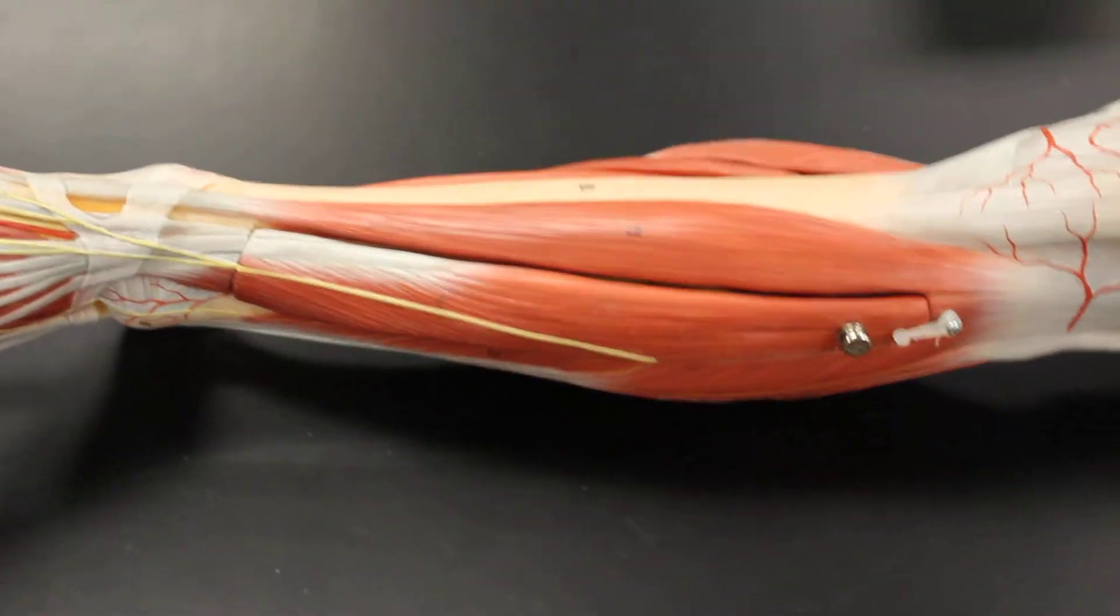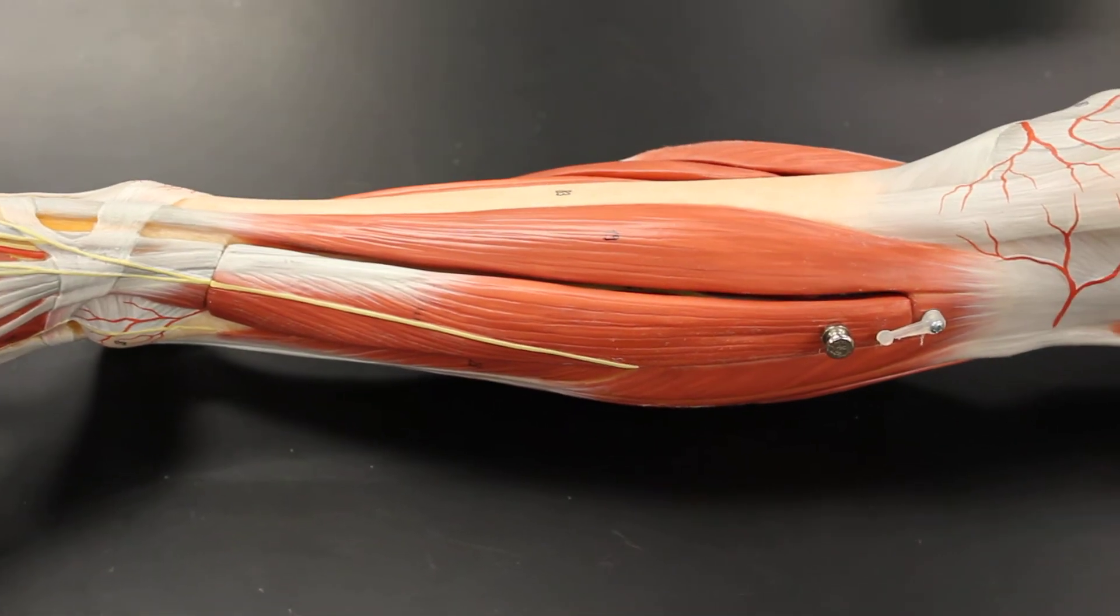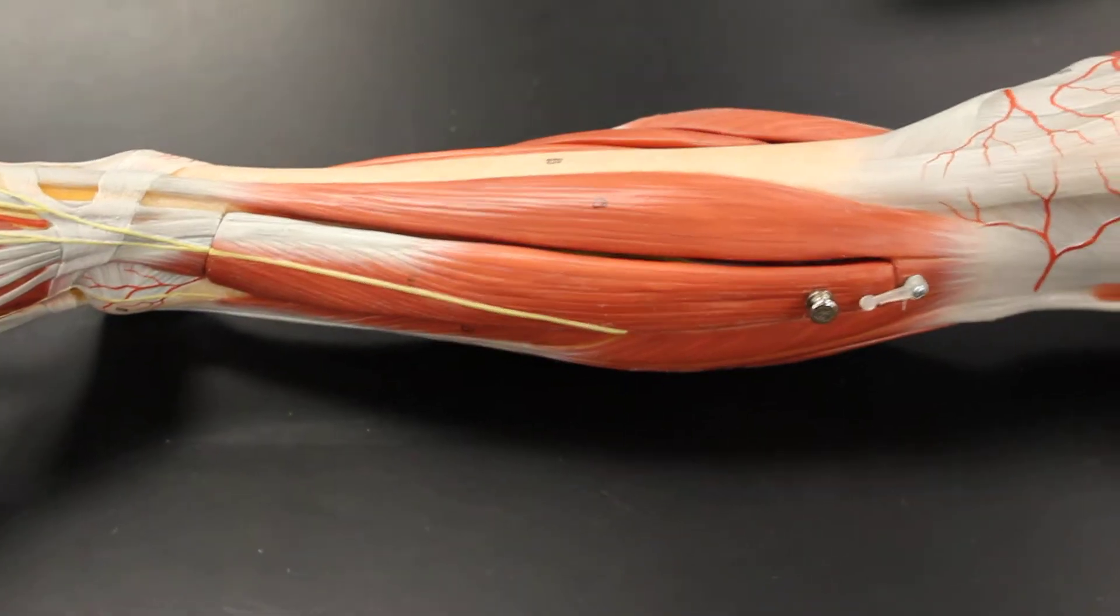So here we are describing the anterior leg. When you take a look at the anterior leg, there's really four muscles, but we're actually just taking a look at three in our class.